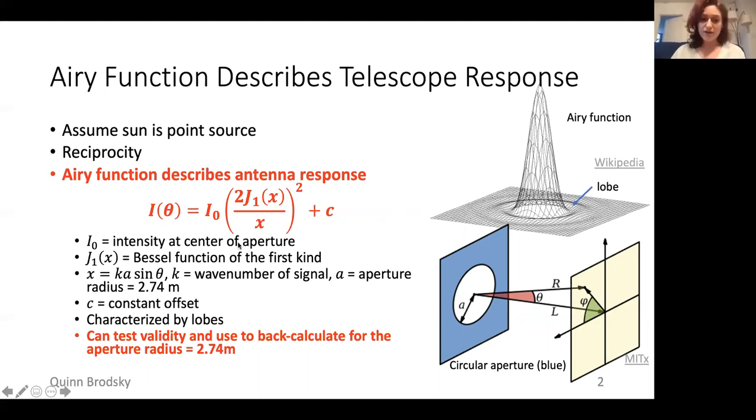The diffraction pattern of a circular aperture is given by this equation here, and it's called an airy function. Here's a graphical representation of this airy function. These airy functions have these really characteristic lobes that kind of diffuse out the further you get from the center. If we look at the response function of the antenna and fit it to the analytical form of the airy function, we can perform some basic calculations to try to back calculate to solve for the aperture of the dish to see how well our assumptions meet our data.